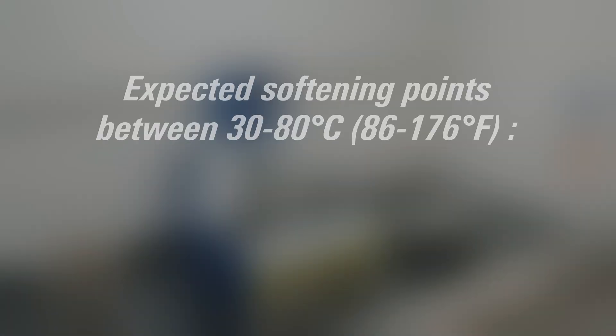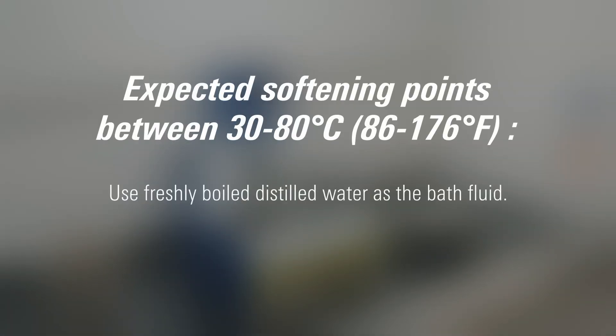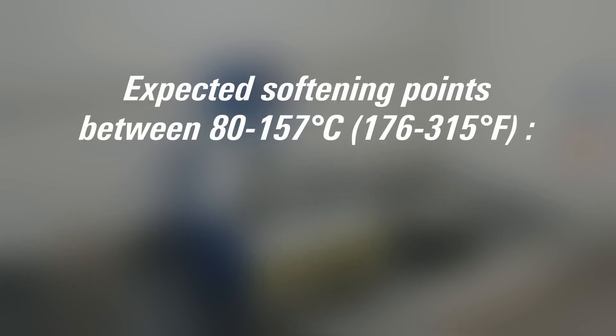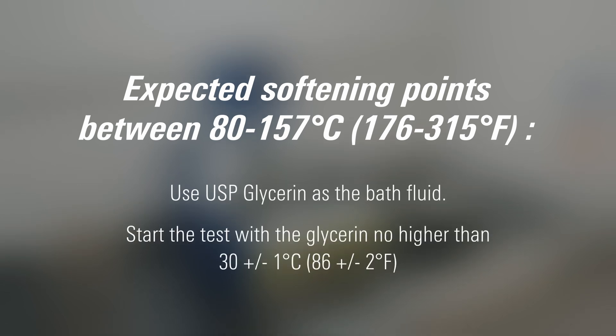For expected softening points between 30 and 80 degrees C, use freshly boiled distilled water as the bath fluid. Start the test with the water at 5 plus or minus 1 degrees C. For expected softening point from 80 to 157 C, use USP glycerin as the bath fluid. Start the test with the glycerin no higher than 30 plus or minus 1 C.